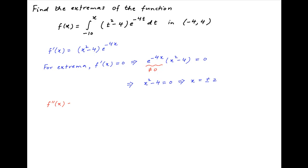Now, in order to determine whether we have a maxima or a minima at these points, we determine the value of f''(x). This is equal to 2x times e raised to the power of minus 4x, plus x squared minus 4 times the differential of e raised to the power of minus 4x, which is minus 4 times e raised to the power of minus 4x.